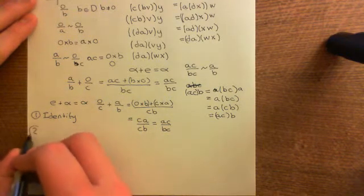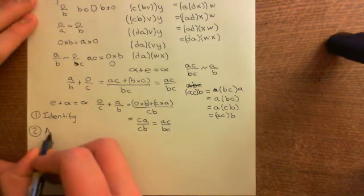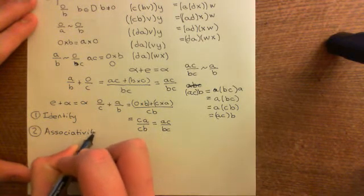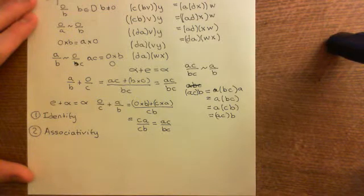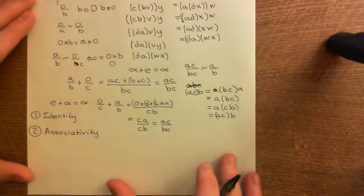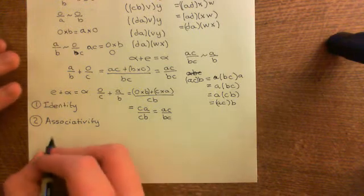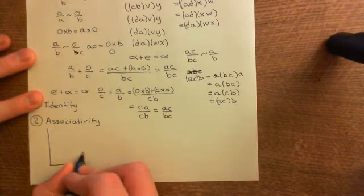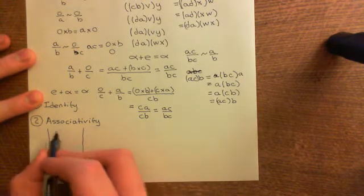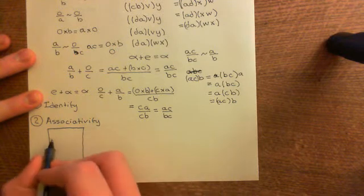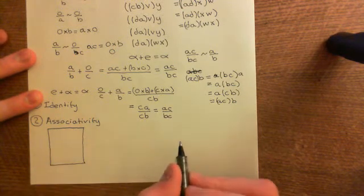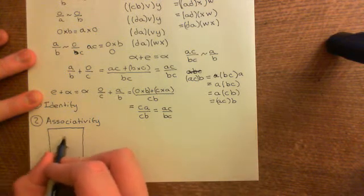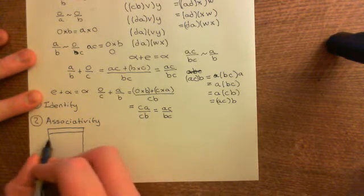Now we want to prove associativity. This is normally a very difficult property to show in algebras, but we'll use the fact that we know the domain is associative, and that's going to help us a lot. We take three equivalence classes and draw the picture: here is the set of all fractions of the form a over b, where a is any element of the domain and b is any non-zero element, partitioned into equivalence classes.